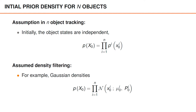If we assume Gaussian densities, then the initial prior at time zero is a product of Gaussian densities with some mean vectors mui and covariance matrices pi.